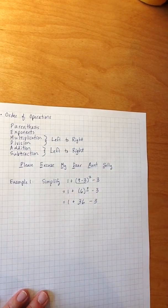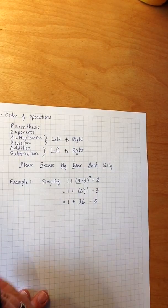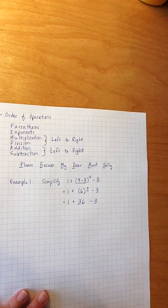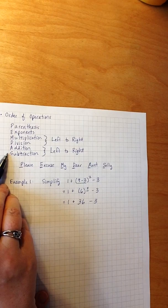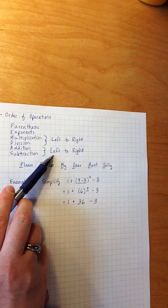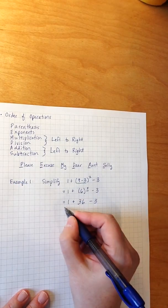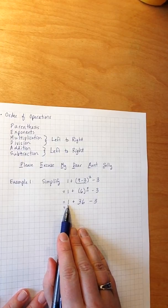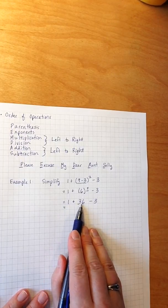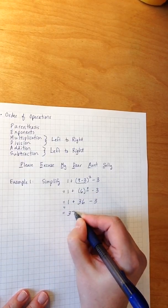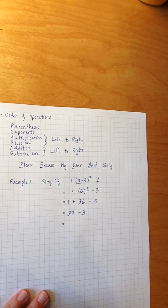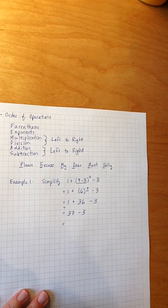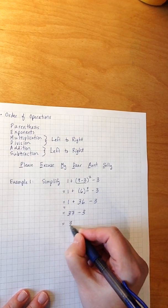I then look at this problem and say, do I have any multiplication division? I don't, so I move right down to addition-subtraction. Remembering that I'm going to do my problem from left to right, I start at my leftmost and do the 1 plus 36 first, and then I continue from left to right and end up with 34.